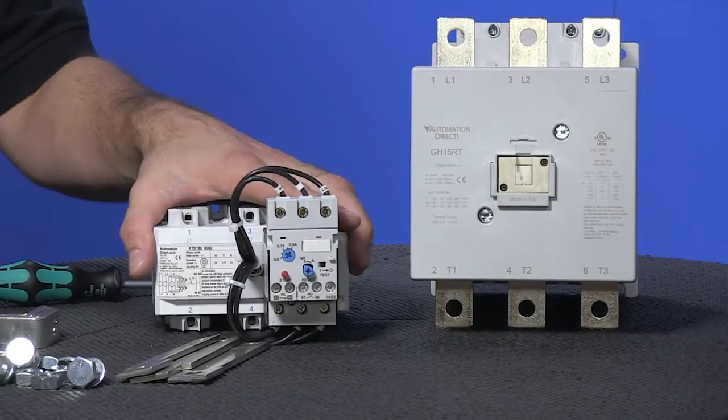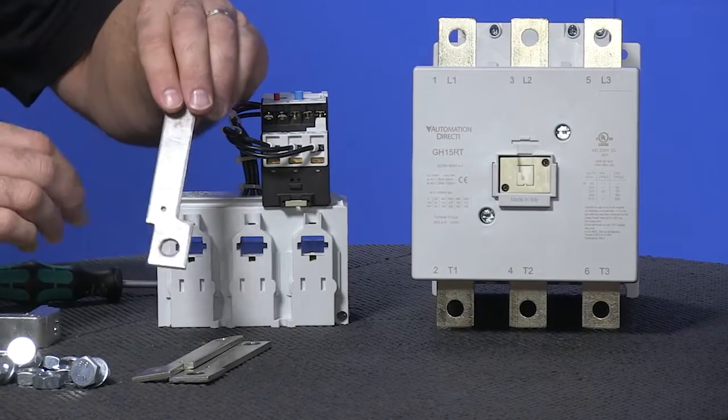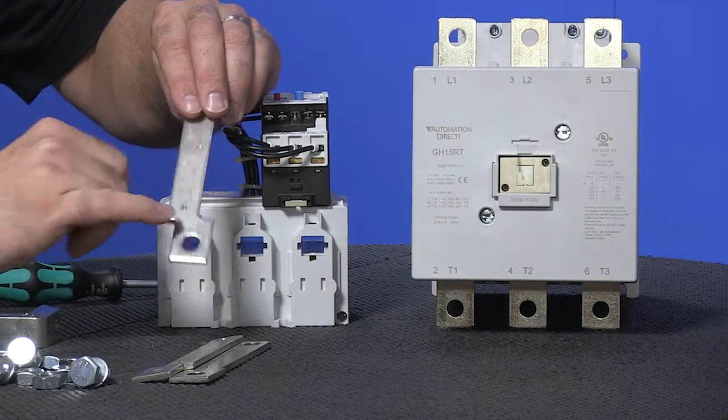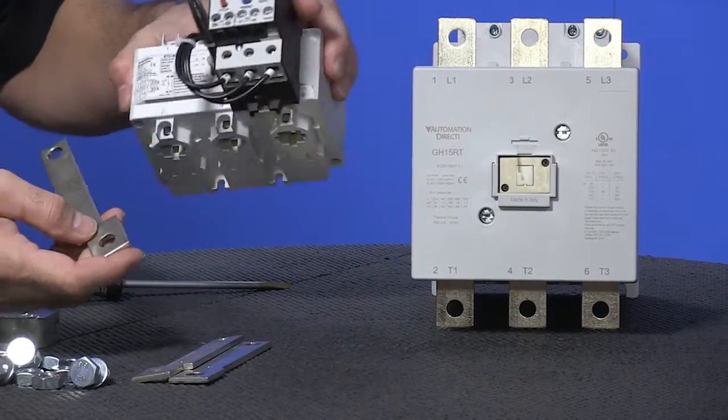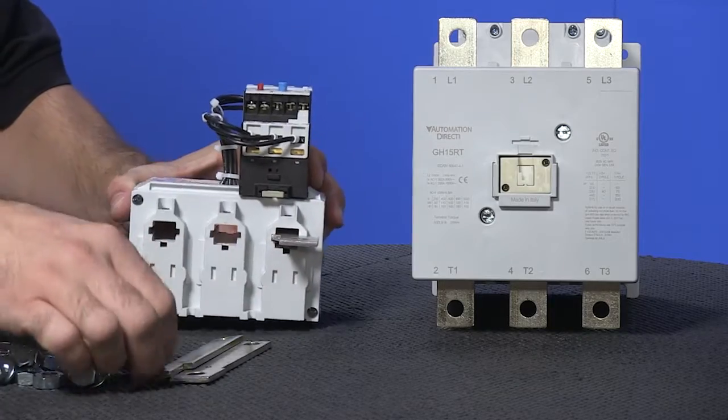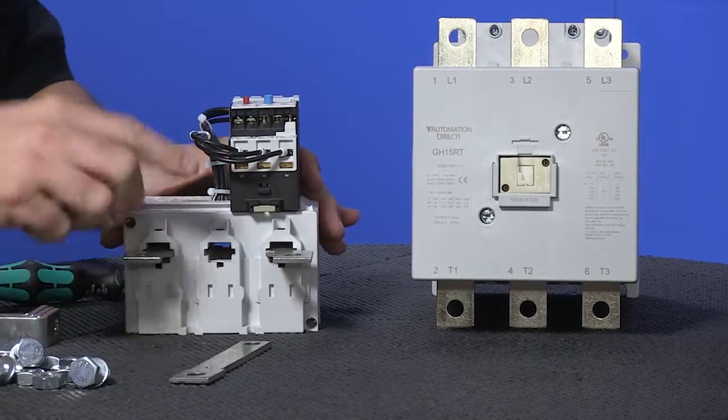First we want to slide in the included bus bars. If you look at these closely, two of them have offsets and all of them have a tapped hole. These you want to go through the bottom of the overload and the offsets need to go on the outsides furthest.